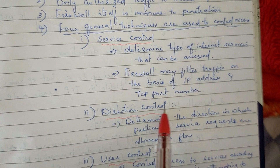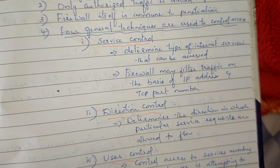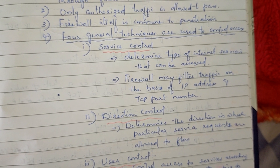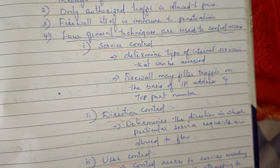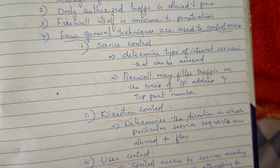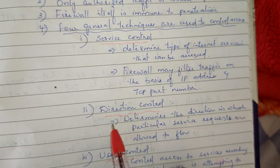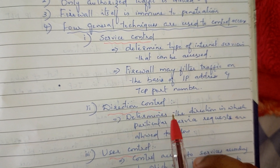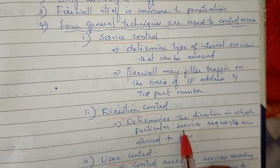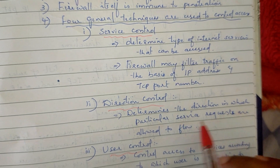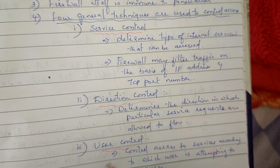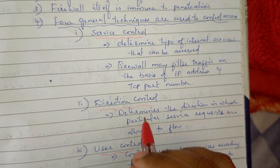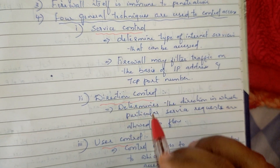Then, Direction Control. In any direction, a particular service request comes to flow. It determines the direction in which particular service requests are allowed to flow. Service requests are allowed to flow in any direction — it indicates the direction flow.